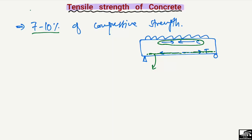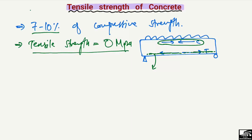In most design cases, the tensile strength of concrete is ignored — it is taken as zero megapascals — because we place reinforcement bars in the tension zone and assume the concrete contributes no tensile strength. However, in reality there is some tensile strength in concrete.